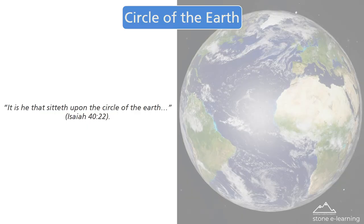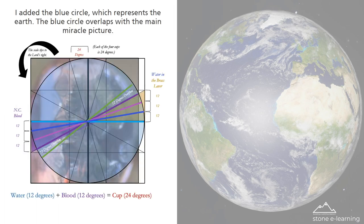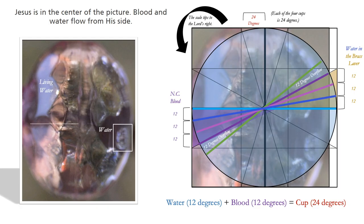'It is he that sitteth upon the circle of the earth.' Isaiah 40:22. A blue circle has been added which represents the earth. The blue circle overlaps with the main miracle picture. Jesus is the center of the picture, and blood and water flow from his side.